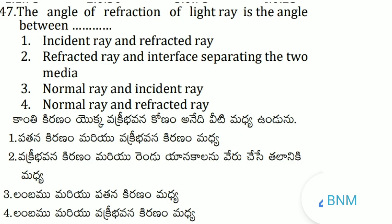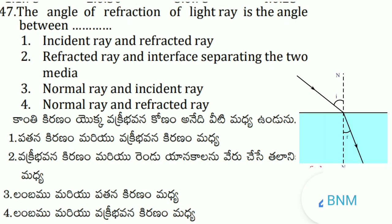The angle of refraction of a light ray is the angle between the normal line and the refracted ray. Observe the diagram carefully. The angle between the refracted ray and the normal line is denoted as the angle of refraction R. So the 4th option — the angle between the normal ray and the refracted ray — is the right answer.